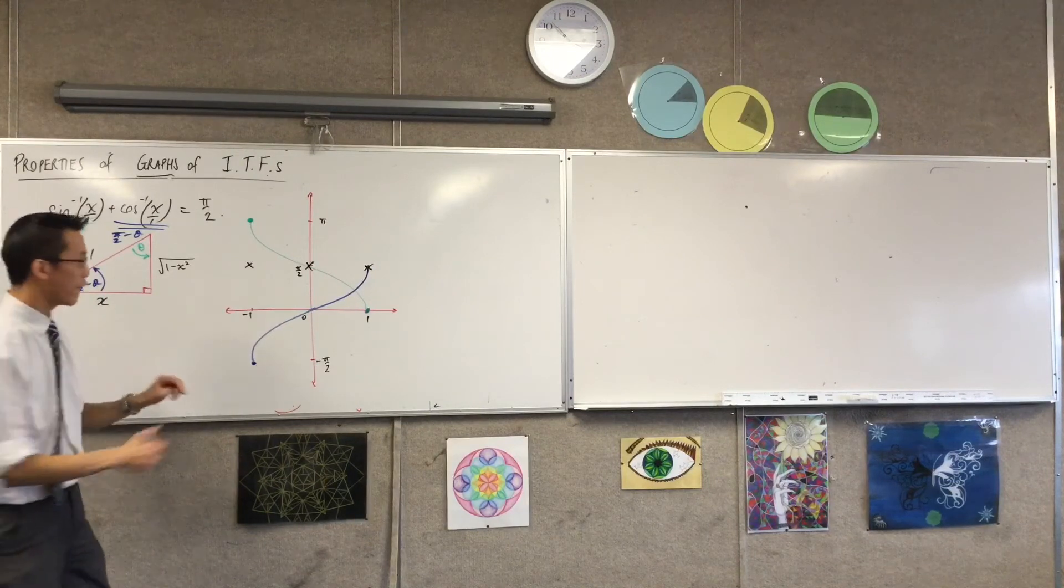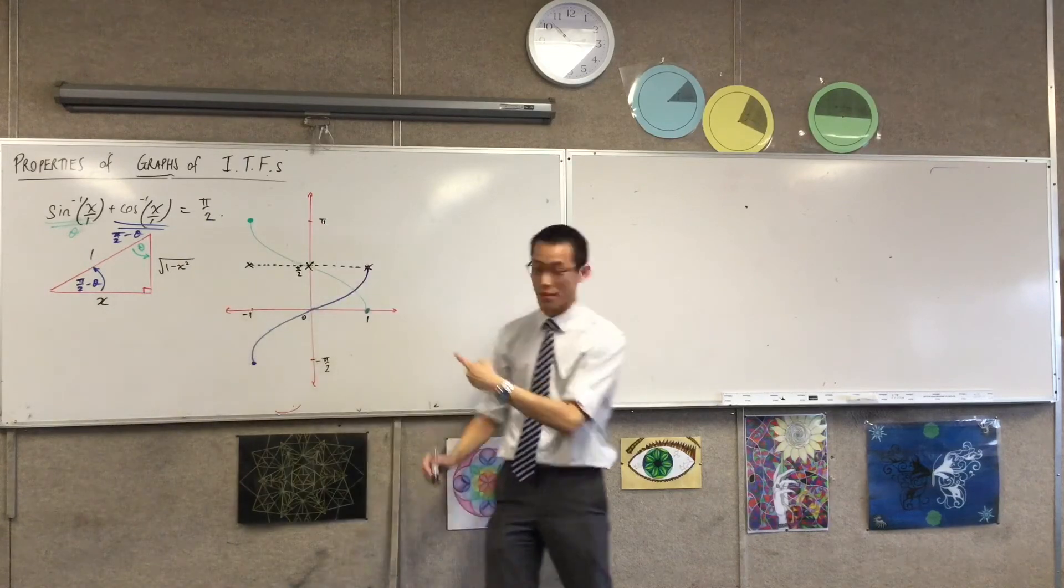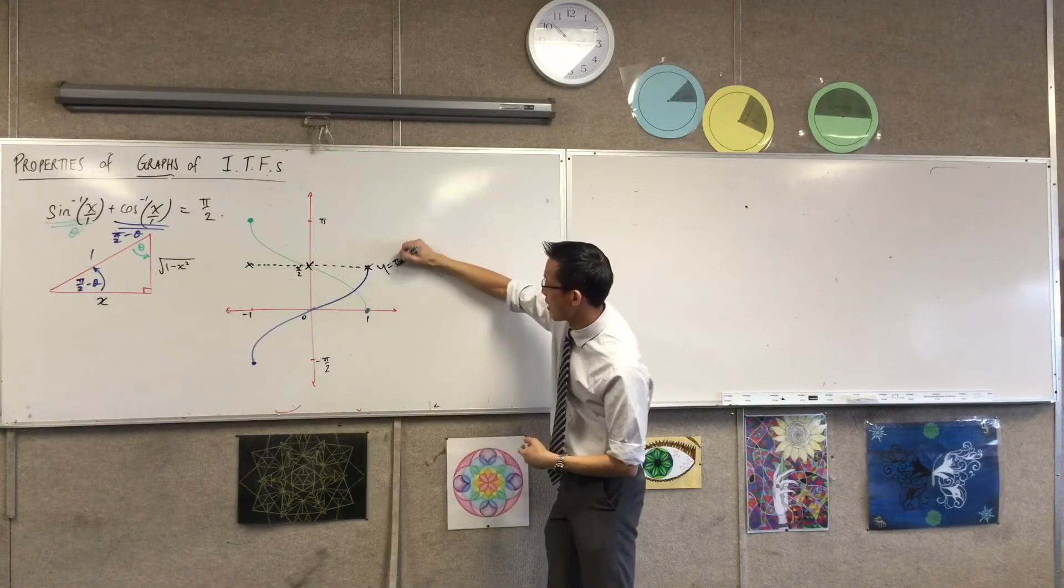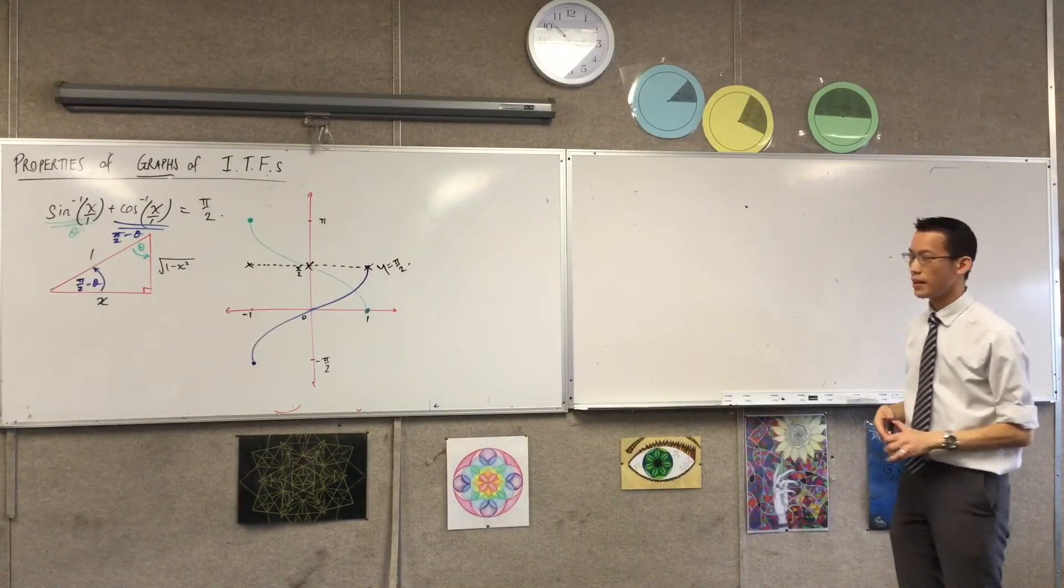So therefore, really what I've got here is this line. And this line, of course, is y equals pi on 2 because we have that intercept right in the middle, which is very easy to see.